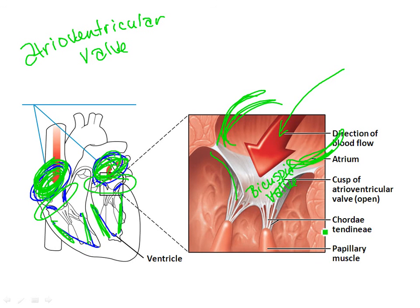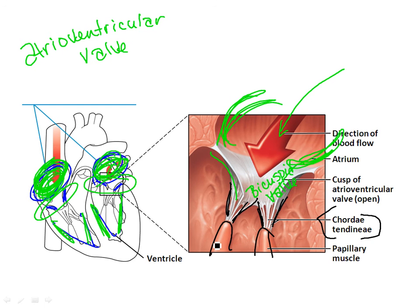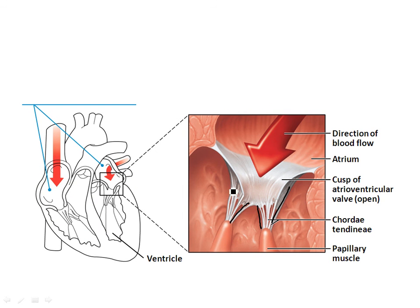Now look at this image — you'll notice structures called the chordae tendineae. These string-like structures are attached to finger-like projections of muscle called papillary muscles. They play a very important role in preventing backflow. When blood flows through the heart, these structures — your chordae tendineae and your papillary muscles — work together. The job of these is to prevent backflow through those atrioventricular valves.